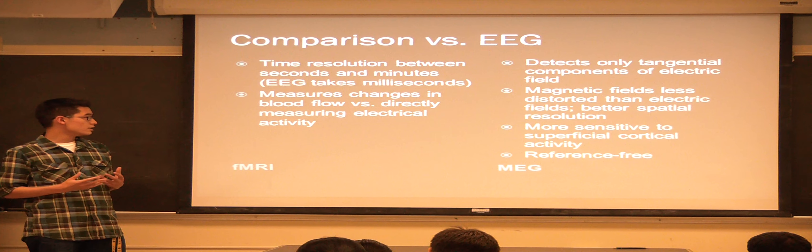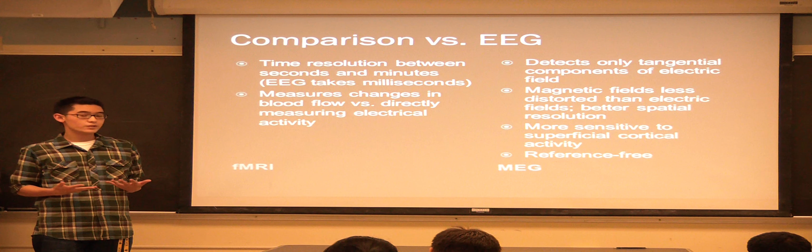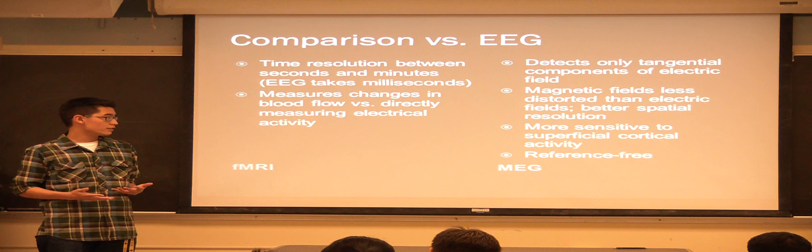Looking at the MEG, the MEG is only able to detect the septomic tangential components of the electric field. MEG's magnetic field is less distorted than the electrical field, meaning it provides a better spatial resolution than an EEG.